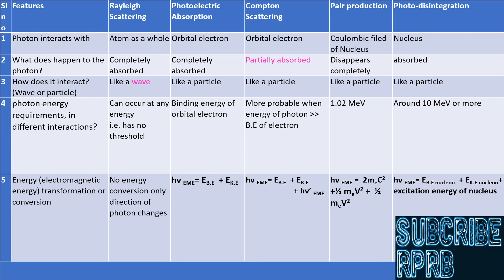Similarly, in the Compton effect, part of the electromagnetic energy is used to raise the potential energy of the orbital electron to zero, thereby making it free from the atom. The remaining electromagnetic energy appears as kinetic energy of the Compton electron along with a scattered electromagnetic photon of lower energy. So electromagnetic energy is converted to potential energy, kinetic energy, and electromagnetic energy of higher wavelength.